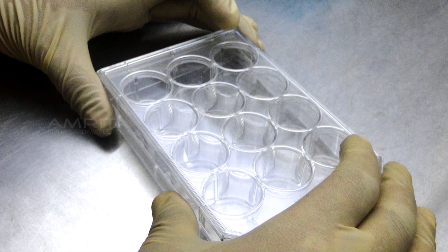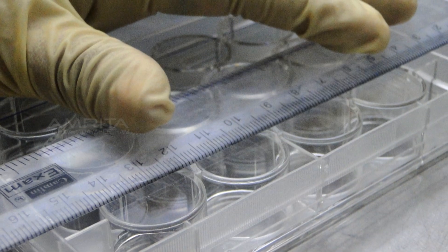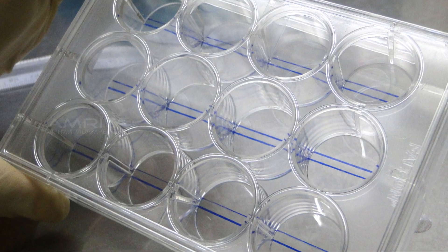Procedure. Take a sterile 12 well plate. Take a marker and draw horizontal lines at the base of the plate by inverting it.